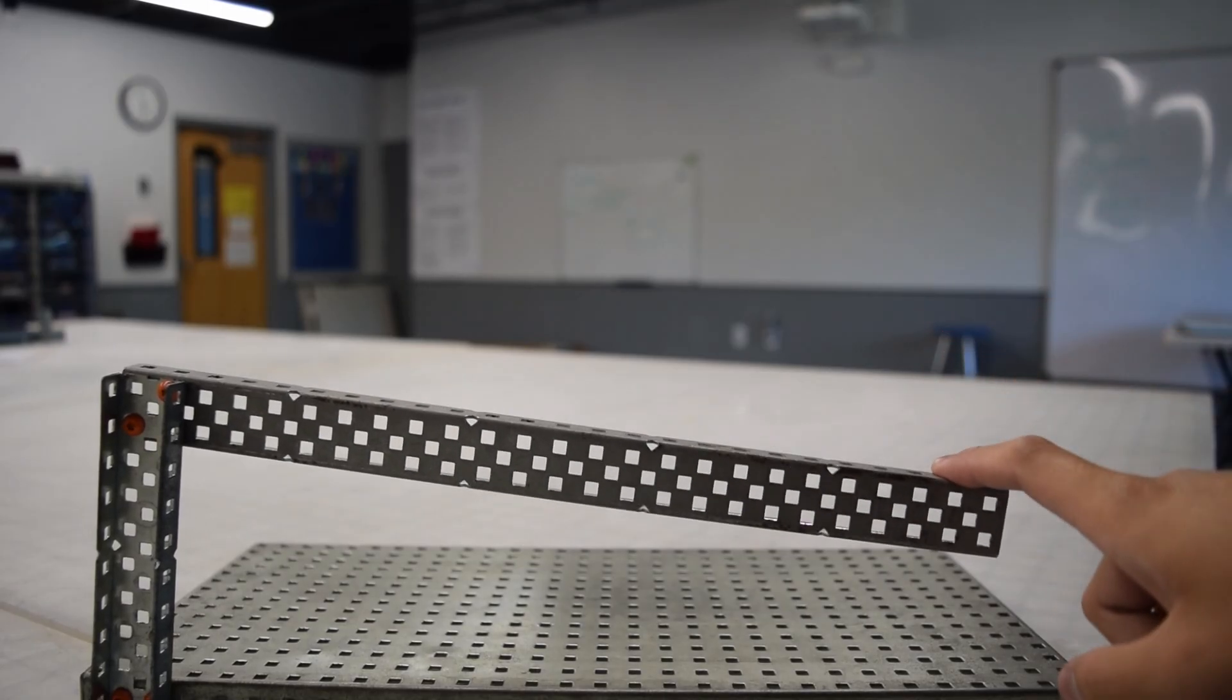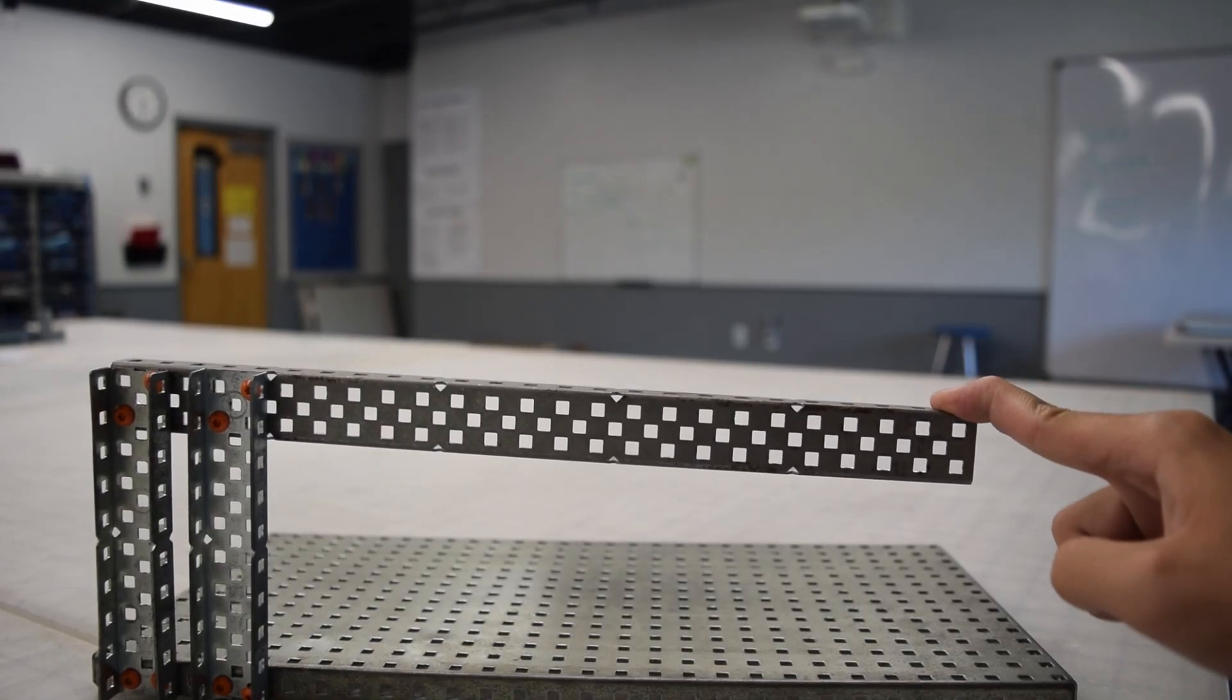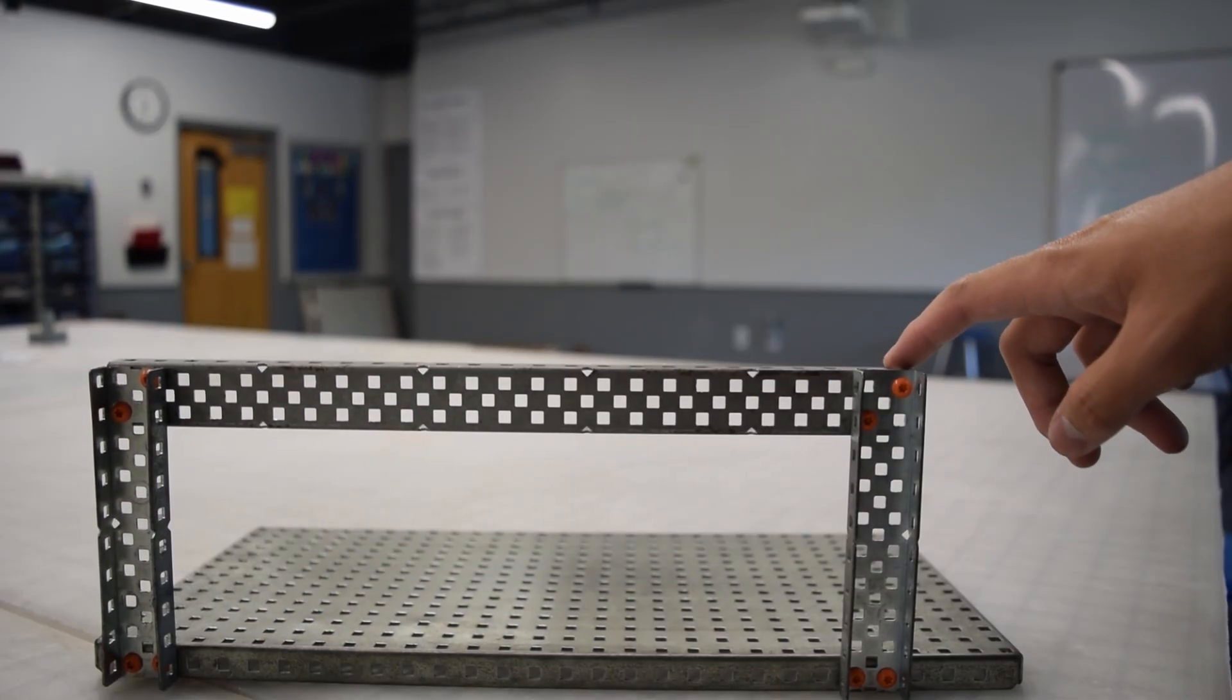Connecting the two C channels at a single point, it obviously bends very easily. Adding another C channel in the middle goes a long way, but if possible, having two contact points at opposite ends ensures rigidity.